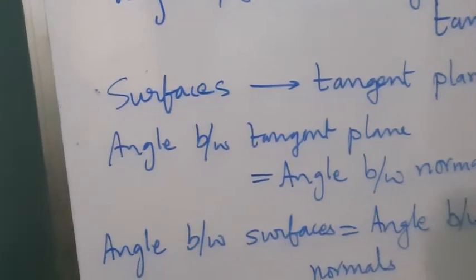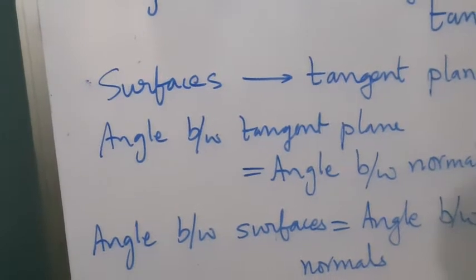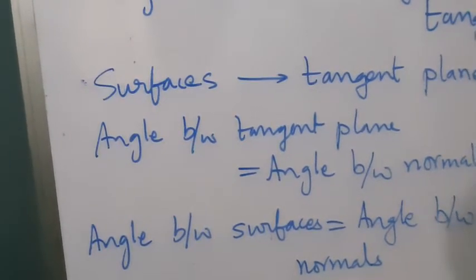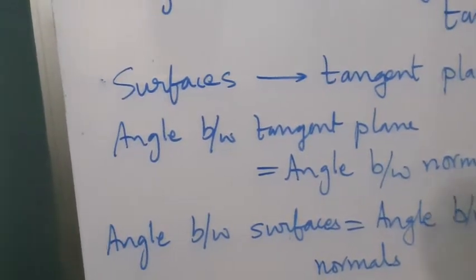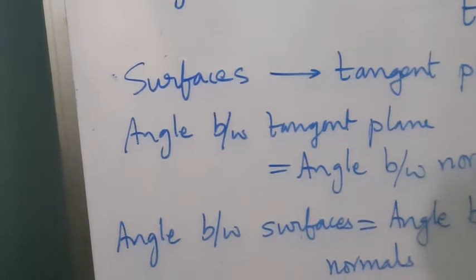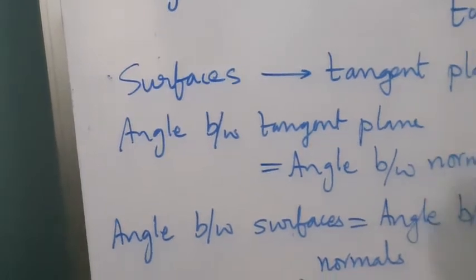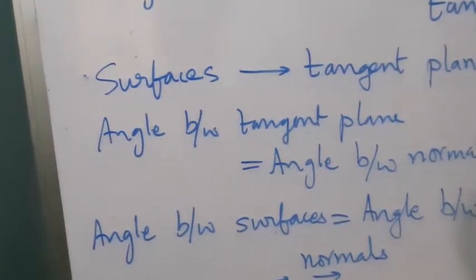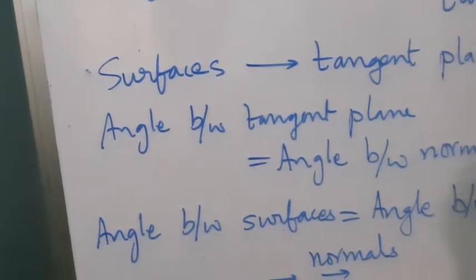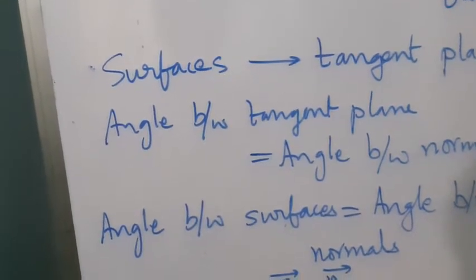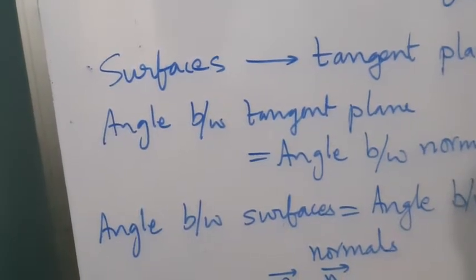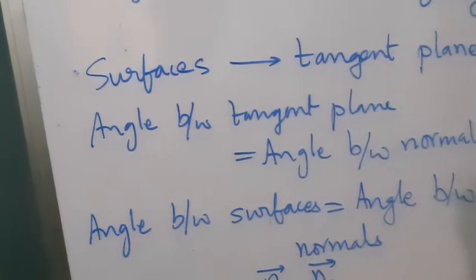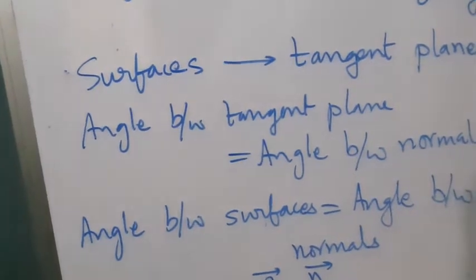If we have n1 and n2 as normals to each of the surfaces, then the angle between the surfaces is given by cos θ = (n1 · n2) / (|n1| × |n2|).